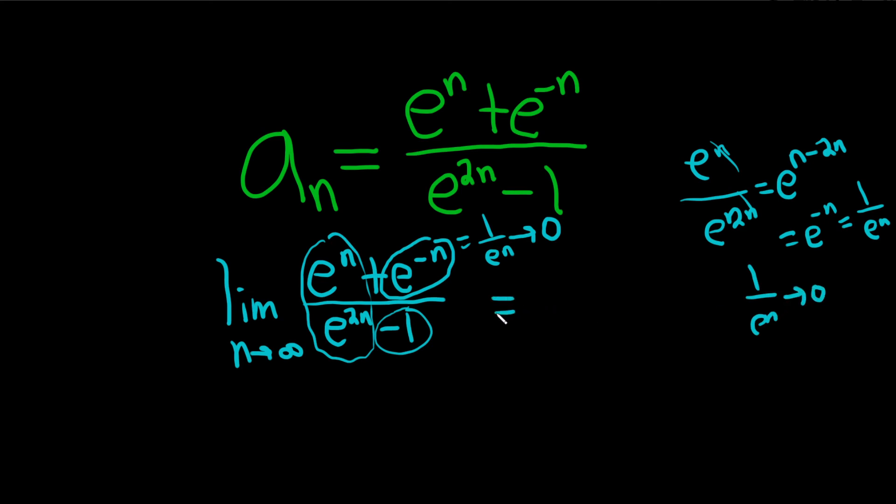So this whole limit is going to be 0. And this is called the limit of the sequence. And because we have a limit, because it's equal to a number, the answer is converges.